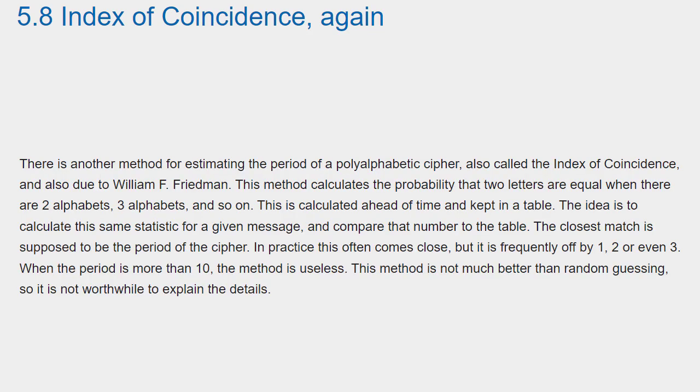There is another method for estimating the period of a polyalphabetic cipher, also called the index of coincidence, and also due to William F. Friedman. This method calculates the probability that two letters are equal when there are two alphabets, three alphabets, and so on. This is calculated ahead of time and kept in a table. The idea is to calculate this same statistic for a given message and compare that number to the table. The closest match is supposed to be the period of the cipher.